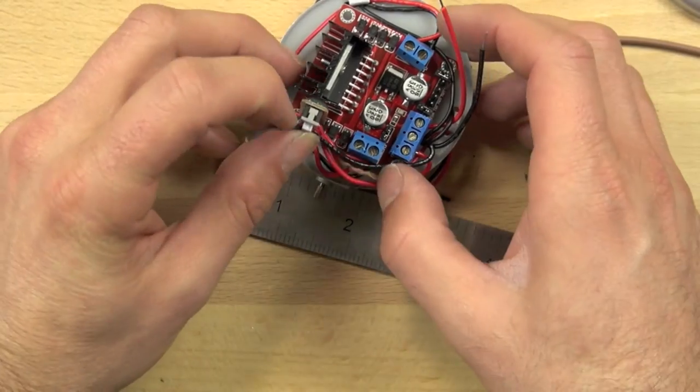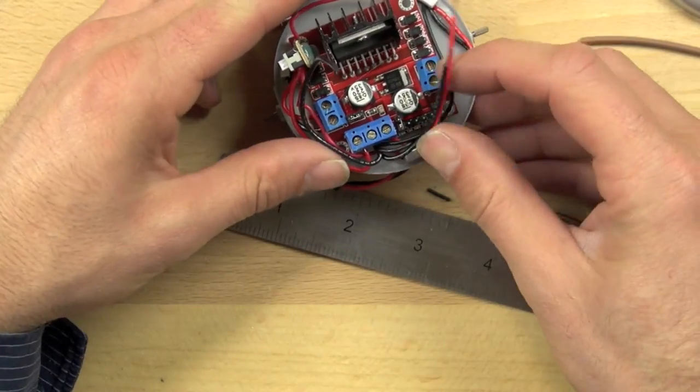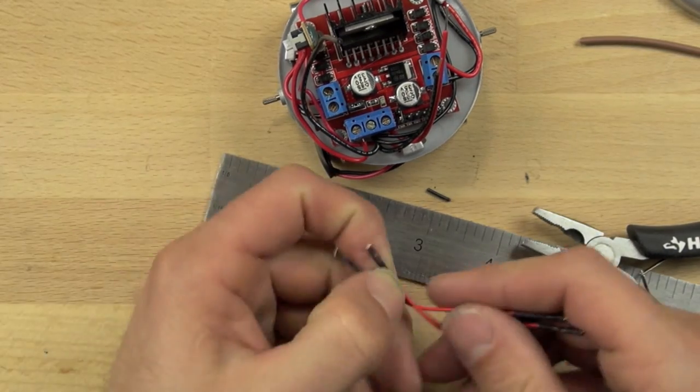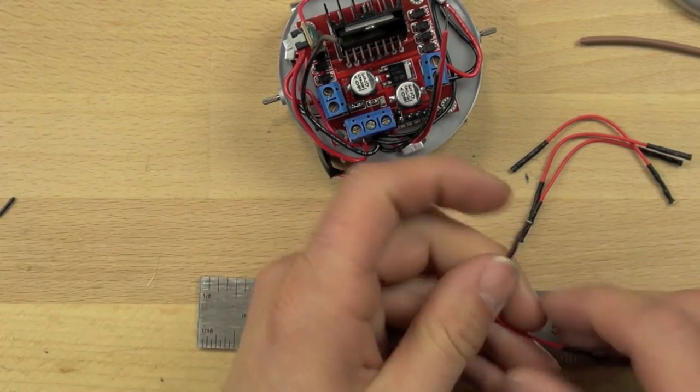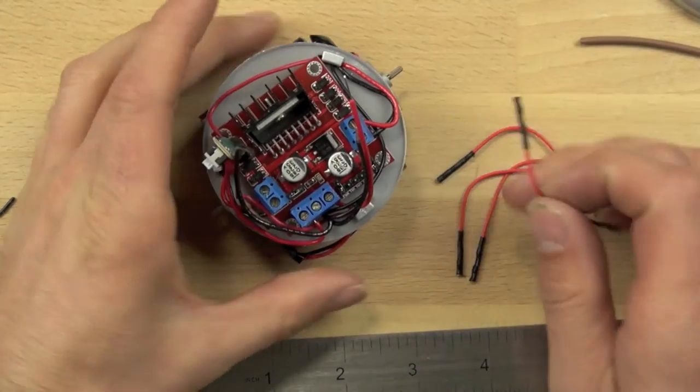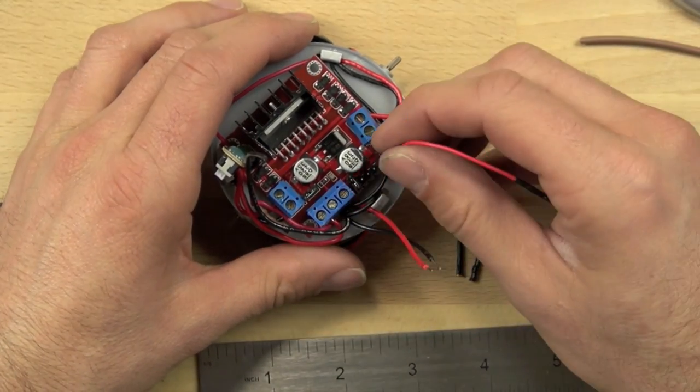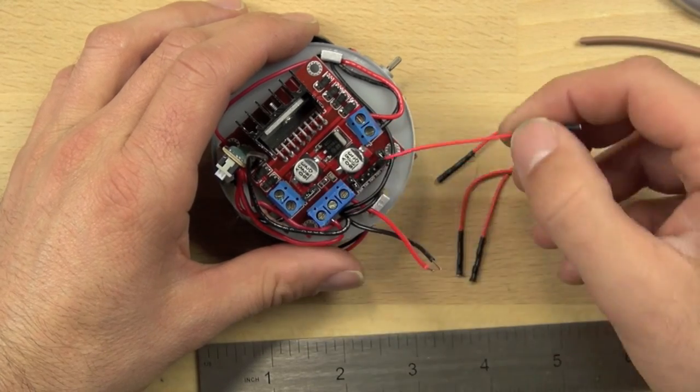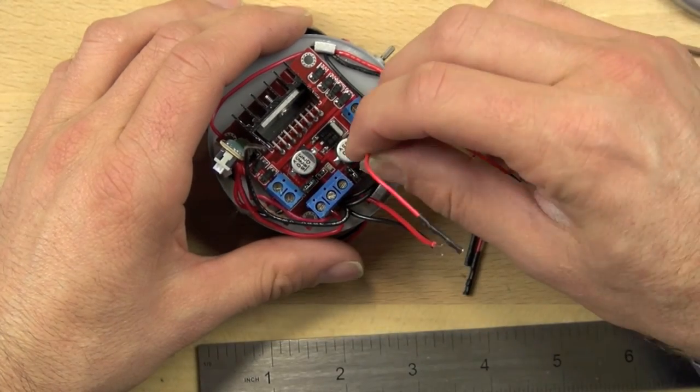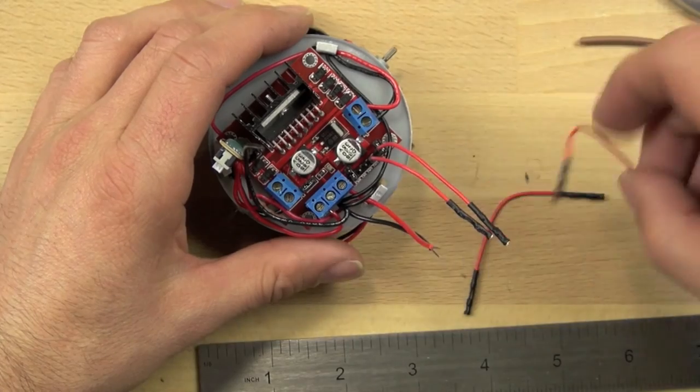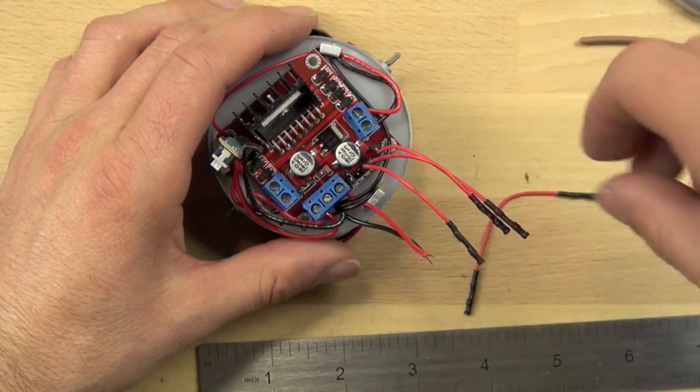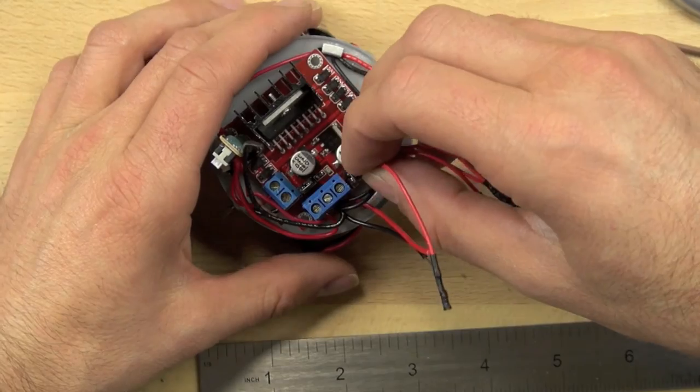But for now, we need to connect our header pin jumper wires. So we have four female-to-female header pin jumper wires. There's one, two, three, four. And we're going to connect those to our header pins on our L298 board. So we're just going to slide those down on all four of those header pins. It doesn't matter which one goes where. And once all of those are connected to our four header pins, we are going to be ready to connect our Arduino.